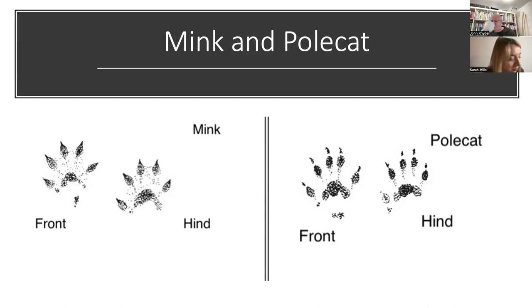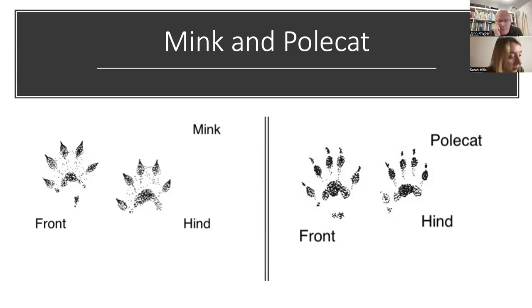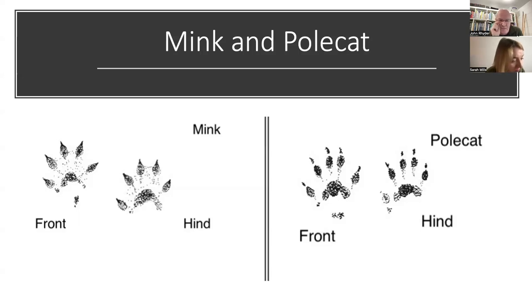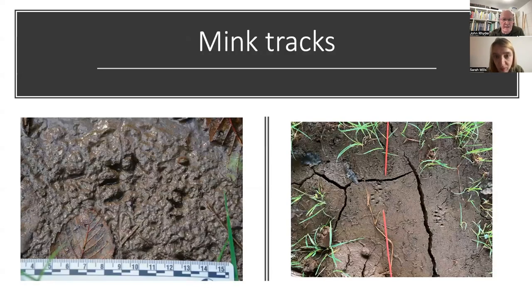Polecat claws are much more robust, built for digging. Mink claws often form a little teardrop pinch, and very often there isn't a negative space between the end of the toe and the start of the claw on a mink, although stoats show that feature more so. Those examples are of real mink tracks shown with arrows pointing at key features, as they would appear in a tracking evaluation question.